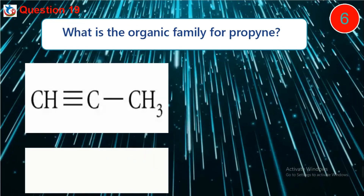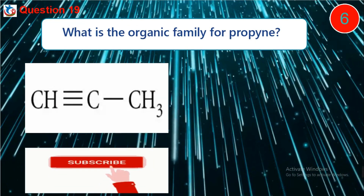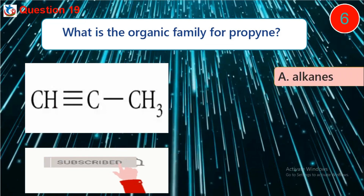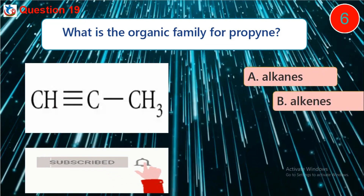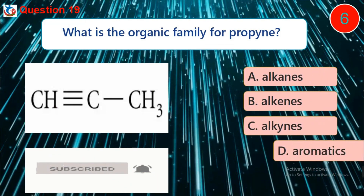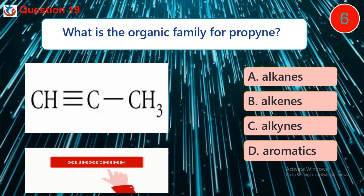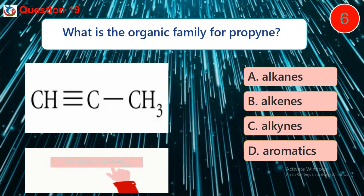Question 19. What is the organic family from the following structure? A. Alkynes. B. Alkenes. C. Alkanes. D. Aromatics.